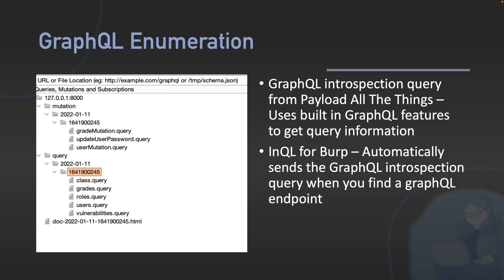For GraphQL enumeration, a simple GraphQL introspection query does a ton — Payload All the Things has one. InQL is a really cool Burp add-on which essentially automatically sends the introspection query when you find a GraphQL endpoint. You can see it's been automatically able to grab the queries and the mutations and all of the queries already in there. I really do recommend InQL.